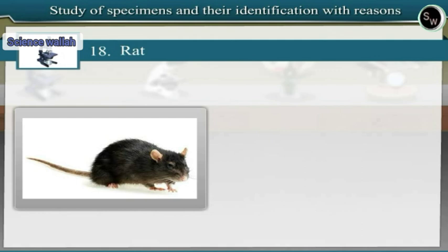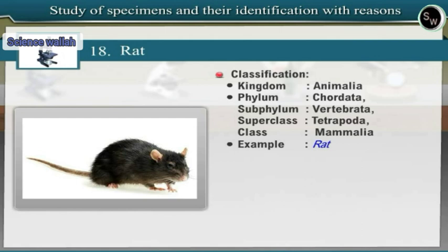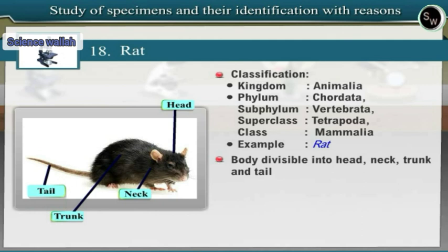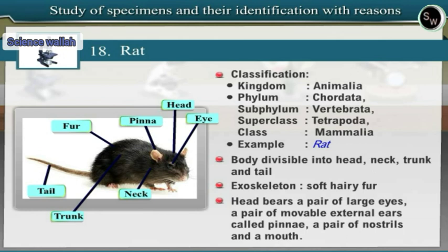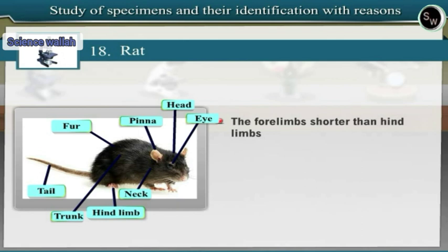Specimen 18: Rat. Observe the specimen of rat. Rat belongs to phylum Chordata, subphylum Vertebrata, superclass Tetrapoda, class Mammalia. Since rat shows mammary glands and viviparity, it is included under class Mammalia. The body of rat is divisible into head, neck, trunk and tail. The exoskeleton is in the form of soft hairy fur. The head bears a pair of large eyes, a pair of movable external ears called pinnae, a pair of nostrils and a mouth. The forelimbs are shorter than hindlimbs. Limbs are used for cursorial locomotion. The tail is long.